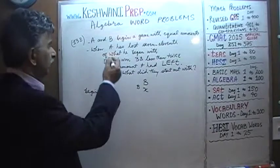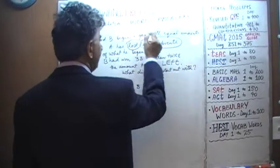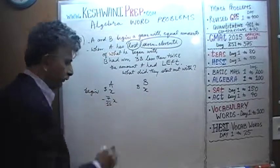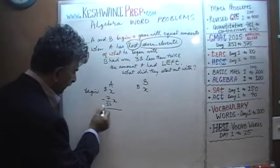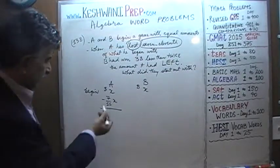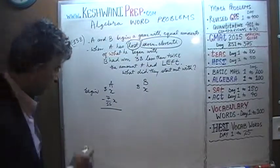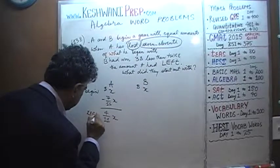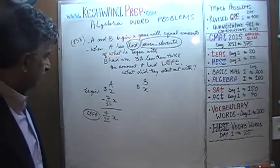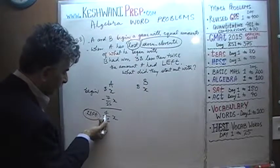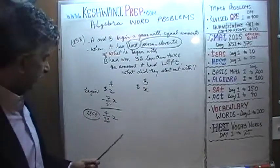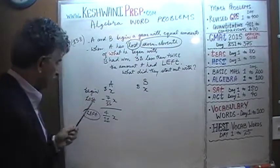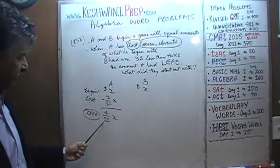Then what happened? We are told that A lost 7/11ths of the money he started out with. If he lost 7/11ths, how much does he have left? That's 11/11ths minus 7/11ths — he has 4/11ths left. So the amount of money A has left is 4/11x, because he started with x and lost 7/11ths, and 7 plus 4 equals 11.